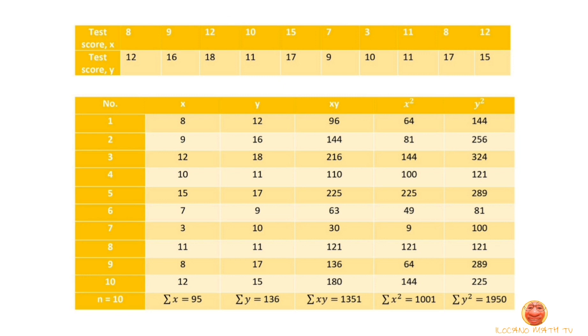And then, we have the Y squared. Here, we'll just multiply the Y by itself again. So, 12 times 12 is equal to 144. Same with the succeeding rows, it will just multiply them by itself. And, of course, don't forget to get the summation of Y squared, that is 1950.